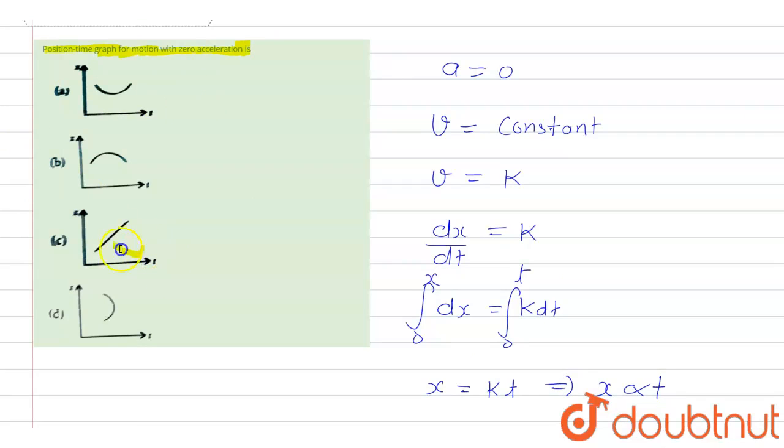Out of all four options, only and only option 3 is a linear graph. So with that we can say that option C is the right answer because the equation of x is coming as the equation of a straight line, and straight line is only shown by option C. So option C is the correct answer.